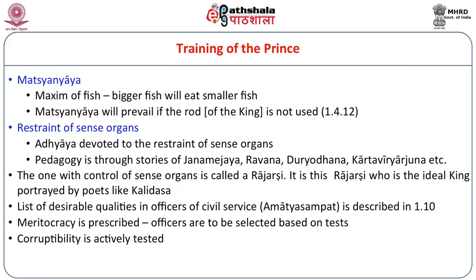The pedagogy of Arthashastra is through stories. Princes are told about Janmejaya, Ravana, Duryodhana, Karthavirya, Arjuna, and others. Through these stories, the principles of Dandaniti or Arthashastra are taught to them. The ideal is the Rajarshi — one who has control of his senses. This has been the ideal not merely in Arthashastra but in related literature; for example, in Kalidasa, Dushyanta is a Rajarshi. This is what Arthashastra aims for in its training of the prince.